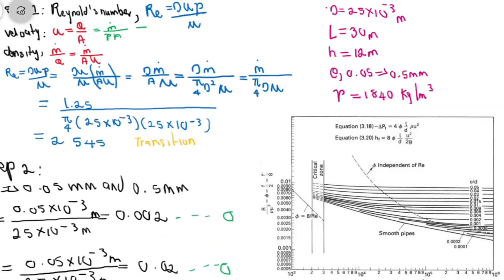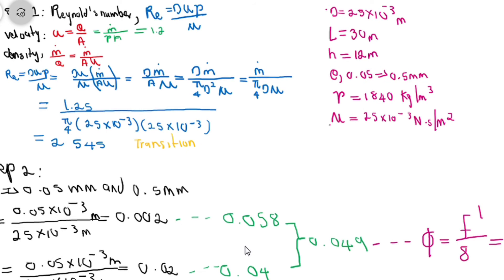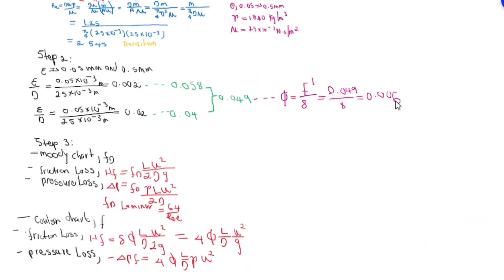Let's first calculate our velocity, which is mass given at 1.25 kilograms per second over density and area. My velocity is 1.38 meters per second.